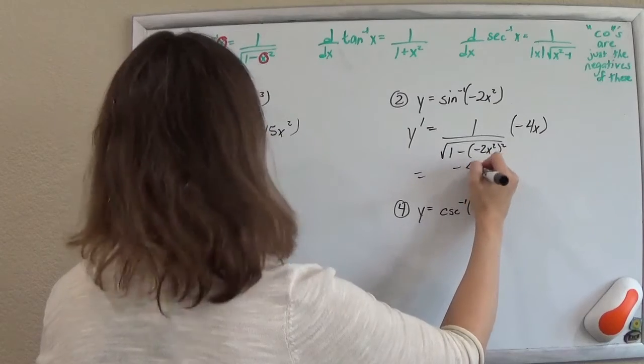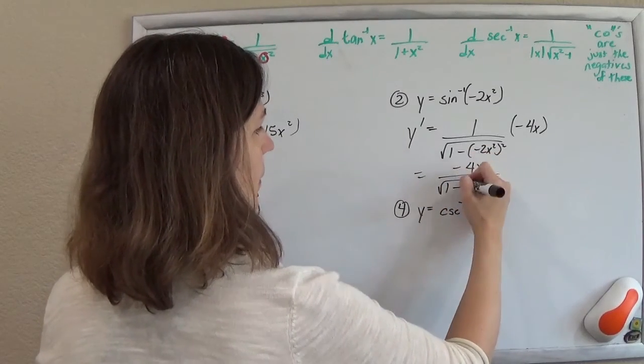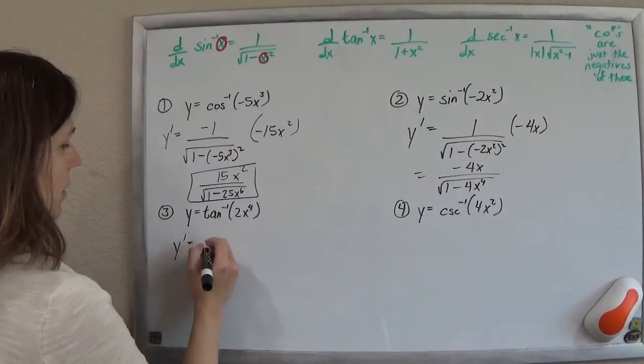And so we clean that up. It's just going to be negative 4x over the square root of 1 minus positive 4x to the fourth.